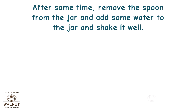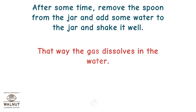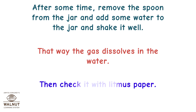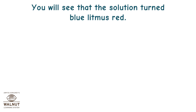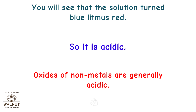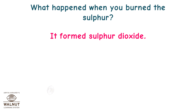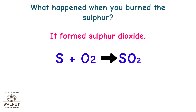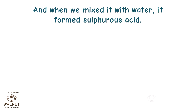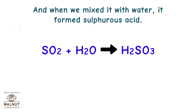After some time, remove the spoon from the jar, add some water to the jar, and shake it well so the gas dissolves in the water. Then check it with litmus paper. You will see that the solution turns blue litmus red, so it is acidic. Oxides of non-metals are generally acidic. The sulphur formed sulphur dioxide: S + O₂ → SO₂. When mixed with water, it formed sulphurous acid: SO₂ + H₂O → H₂SO₃.